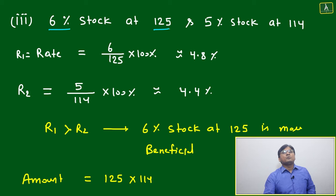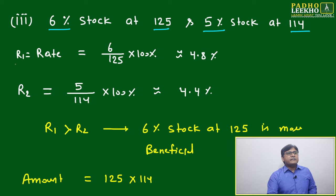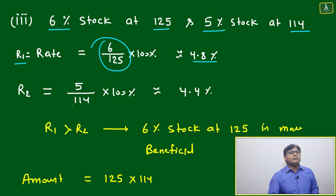The stock is 6% stock at 125, another is 5% stock at 114. The first rate of return will be 6 out of 125, that will be around 4.8%.